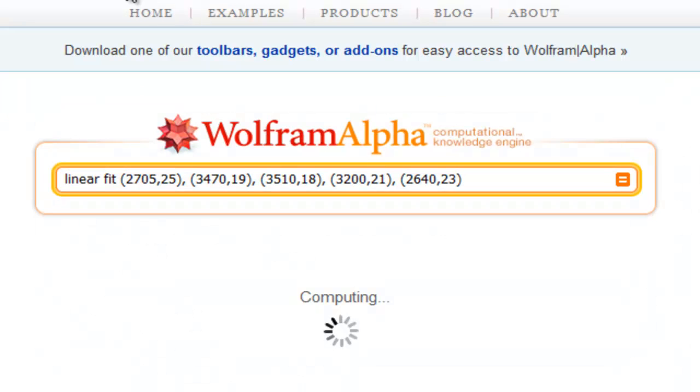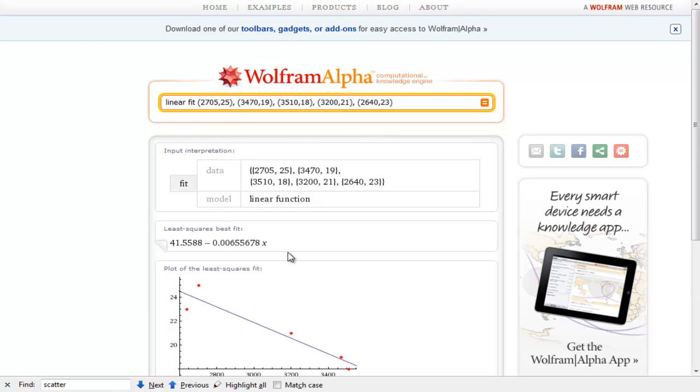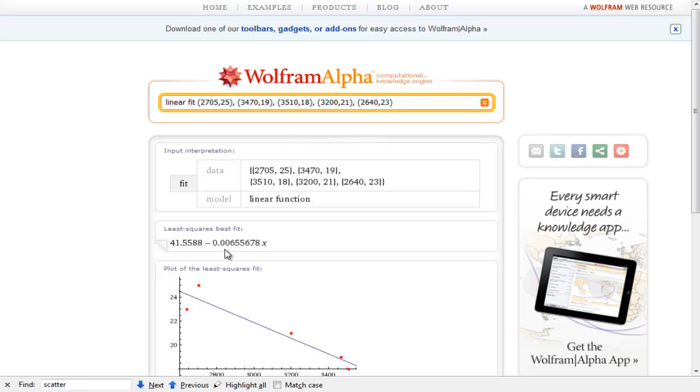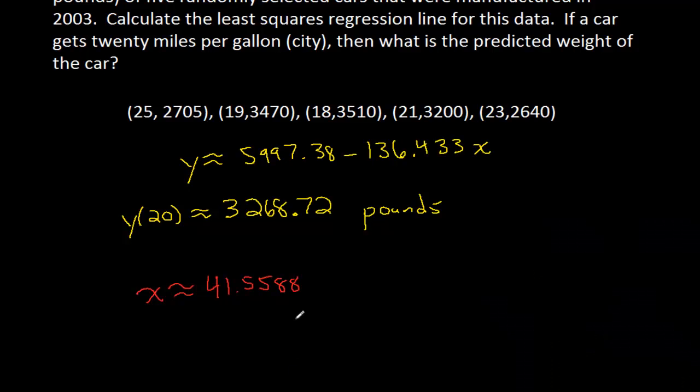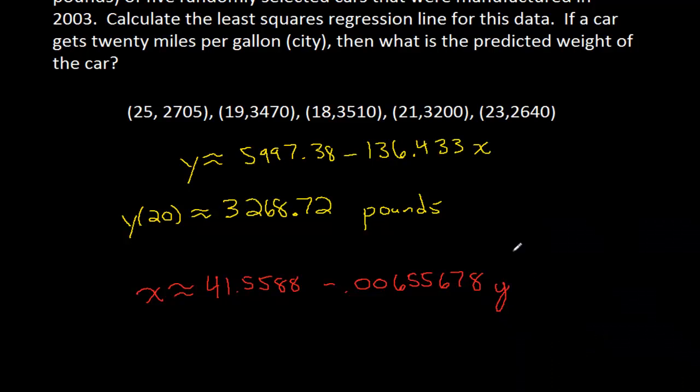If I go into Wolfram Alpha and do a linear fit but change the order of these variables so my old x values are now my new y values and vice versa, press enter and I'll get my new line of best fit. When it gives me this new line remember the x and y got switched, so when I write it down I'm going to write it as x equals this expression with y. I got x ≈ 41.5588 - 0.00655678y.